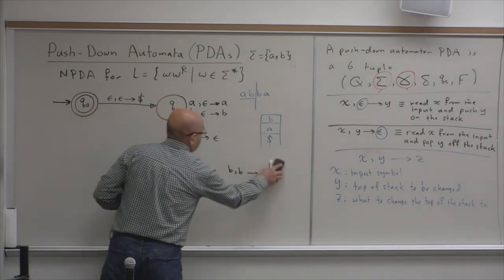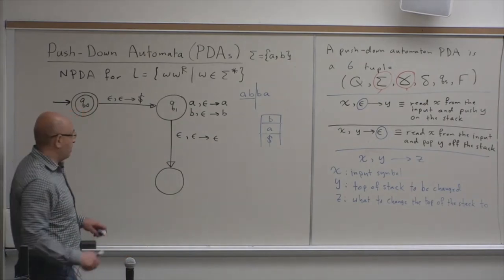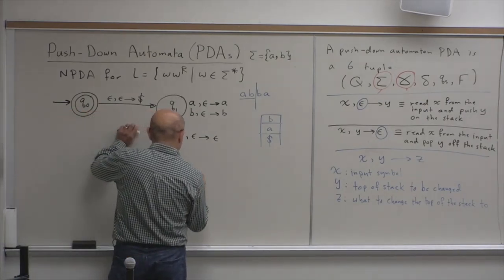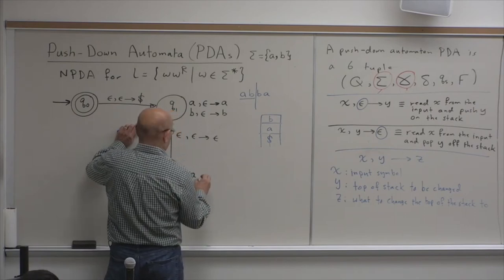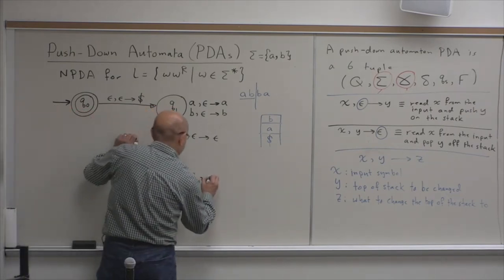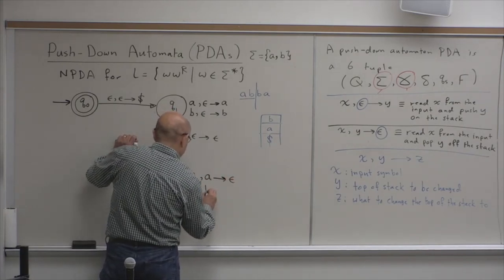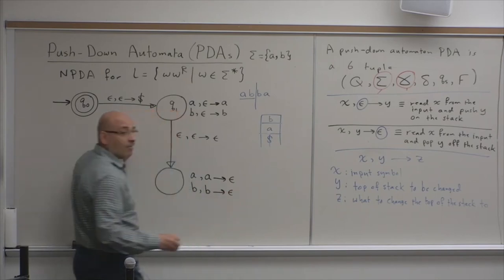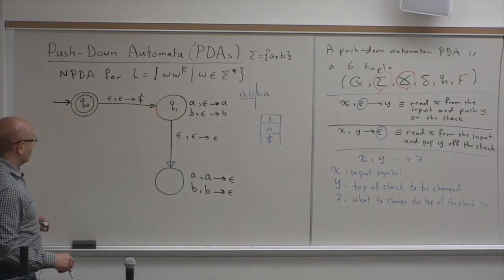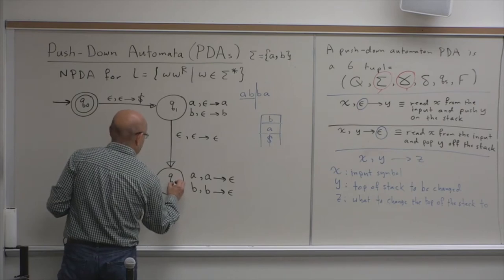Now, here, what should happen? I should pop. Now, if I'm reading an A, I should pop an A. And when I'm reading a B, I should pop a B. And this is the state, Q2.